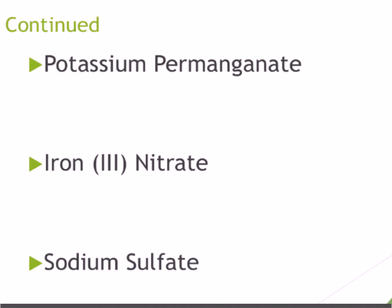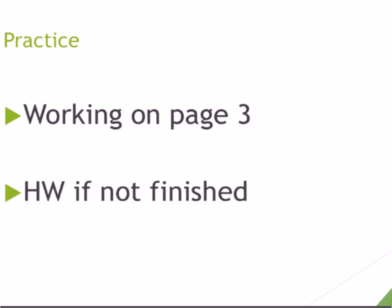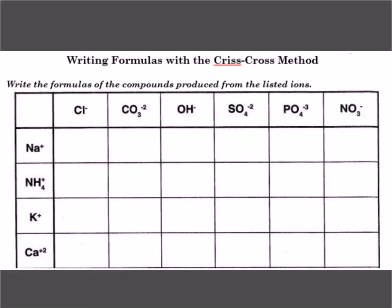You can do the remaining problems on your own and check your work on my website. Homework was page three, first four problems. Show the crisscross method first, then write your formula. When you have polyatomic ions, always draw the parentheses with the charge on the outside — it's a good habit, otherwise you'll get into trouble later on.